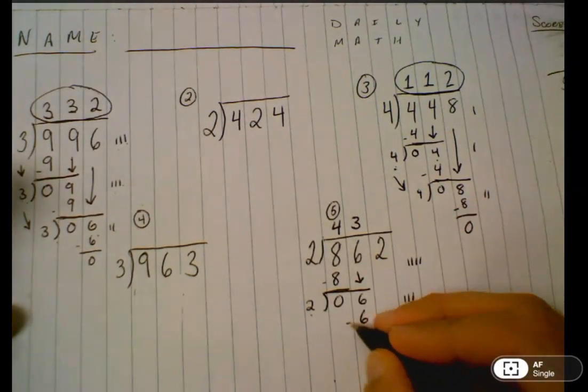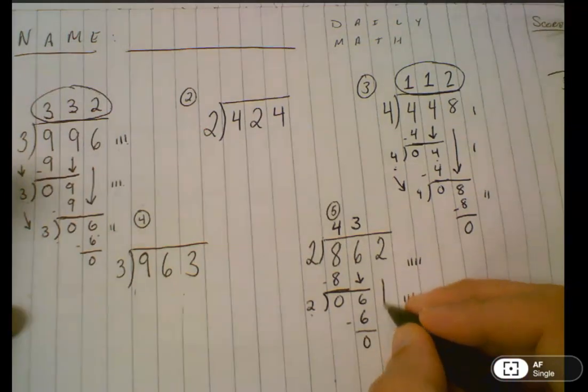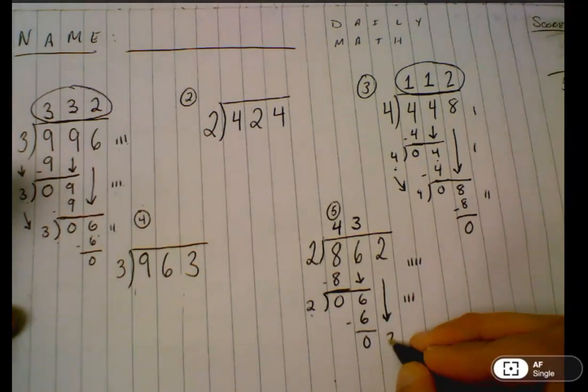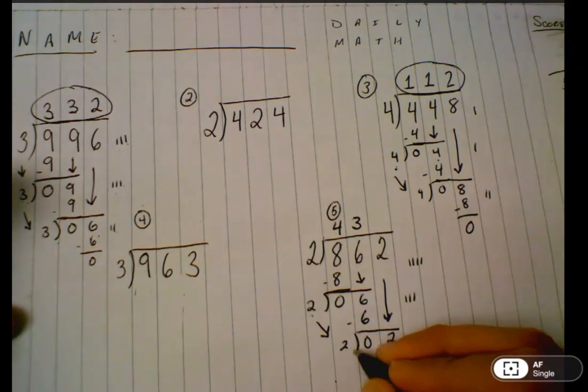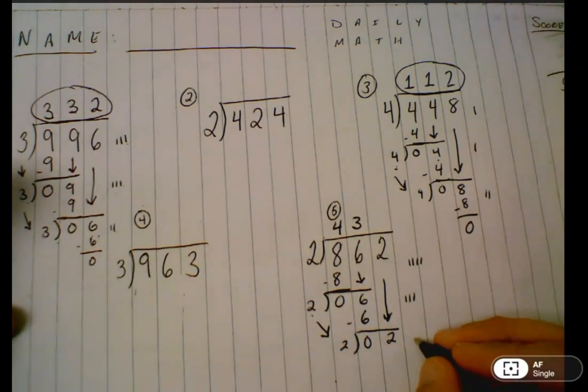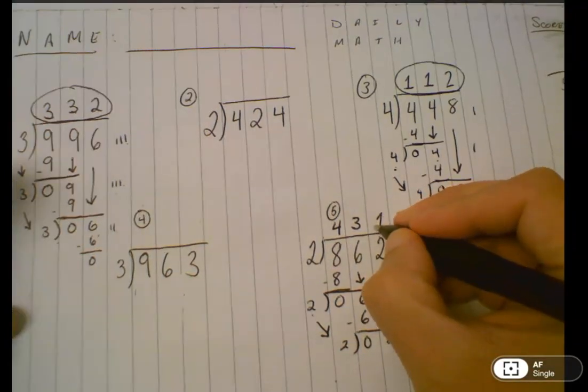Three times two is six. Subtract, bring down, and repeat one more time. Skip count by two until you get to two. That's just one. Put that in your quotient.